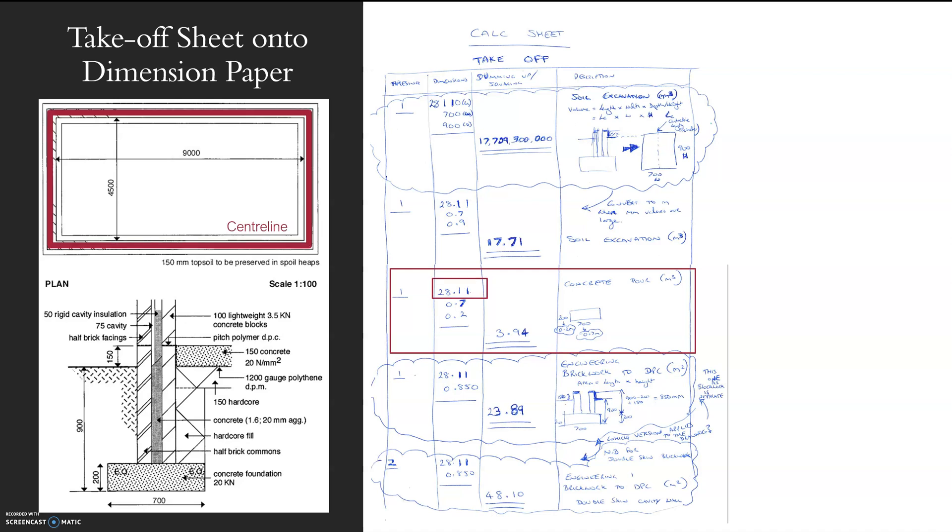However, we are doing the foundation so it needs to be a volume, meters cubed. Again, I'm timesing three values together. I've got my center line, so we've done the center line perimeter measurement earlier, and timesing that by the width of my pour and then timesing it by the height. Those three values gives me my volume of my pour.